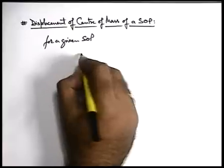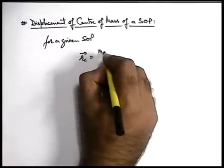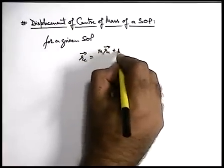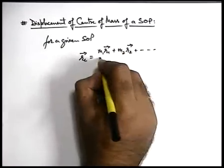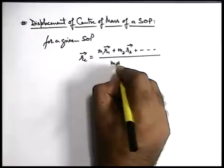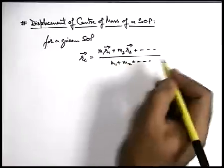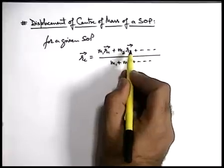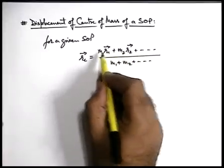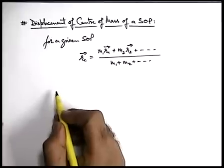we find position vector of centre of mass as m-one r-one vector plus m-two r-two vector plus and so on upon m-one plus m-two plus and so on. Here r-one, r-two, r-three are the position vectors for the locations where masses m-one, m-two, m-three are placed.